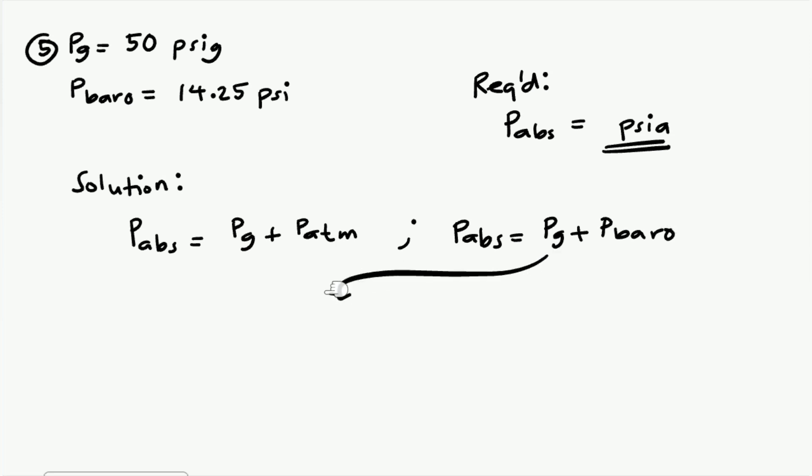So let's solve. For absolute pressure, we have gauge pressure of 50 PSIG plus barometric pressure of 14.25 PSI. So our final answer in PSIA will be 64.25 PSI absolute. This is our final answer for problem number five.